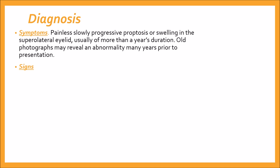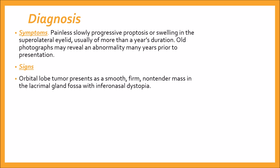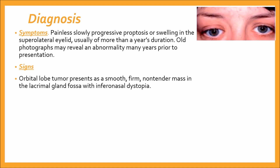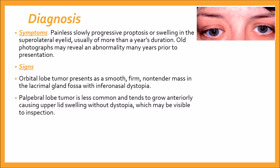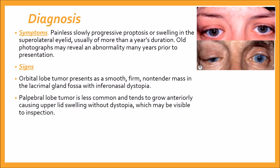Upon examination, in an orbital lobe tumor it presents as a smooth, firm, non-tender mass in the lacrimal gland fossa with inferonasal dystopia. For the palpebral lobe tumor, as it is less common, it tends to grow anteriorly causing upper lid swelling without dystopia, which may be visible on inspection as well.